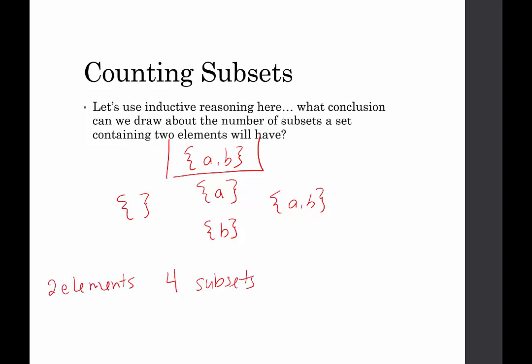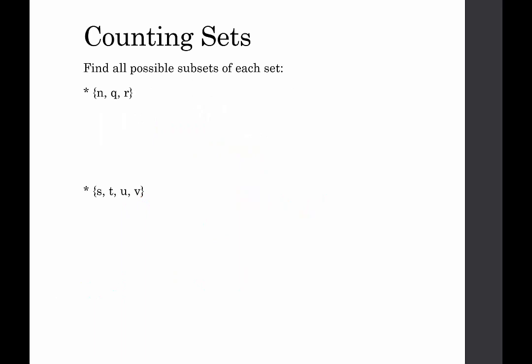Two elements has four subsets. So what do we think is going to happen if we have three elements or four elements? Go ahead, pause the video, and see if you can find all the possible subsets for a set containing three elements and all the possible subsets for a set containing four elements.